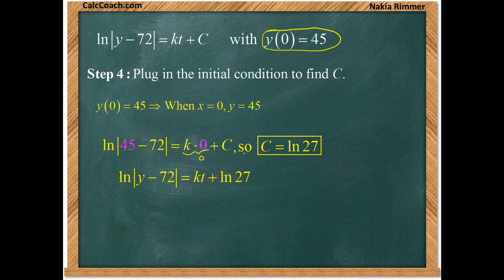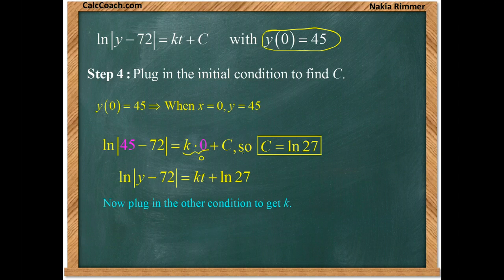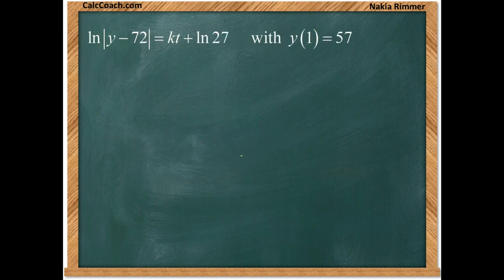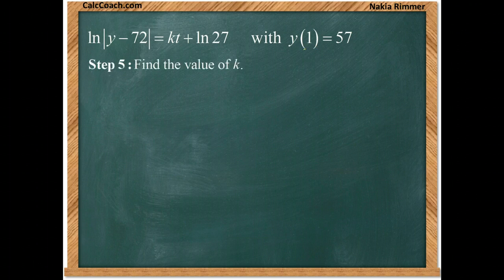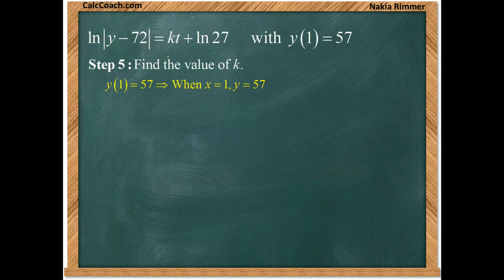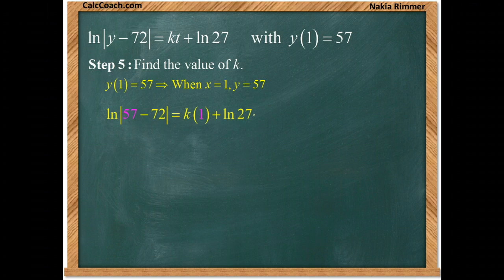Next we're going to go after the K. We had another condition. We said after a minute we knew that the temperature rose to 57 degrees. So now we can plug that in. When T is 1, Y is 57, and we'll get the K. So 57 minus 72 in absolute value inside of a log is K plus the log of 27.